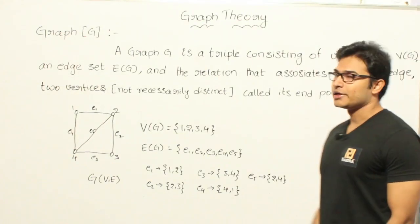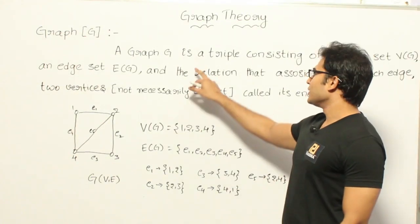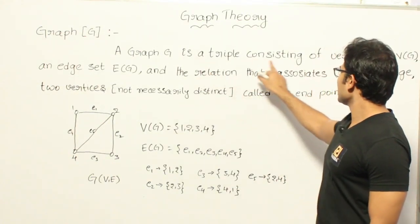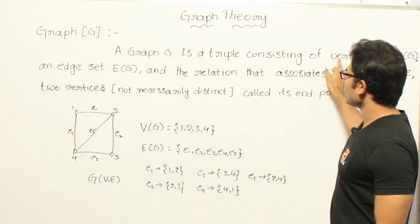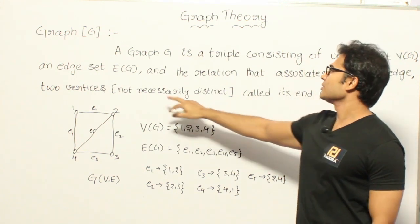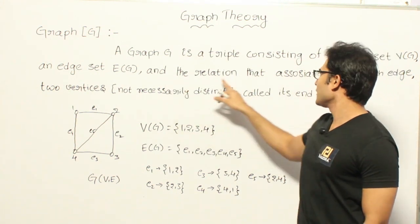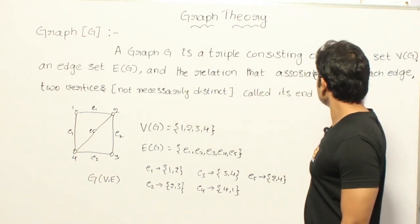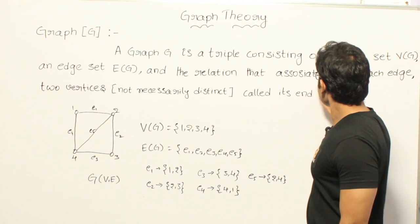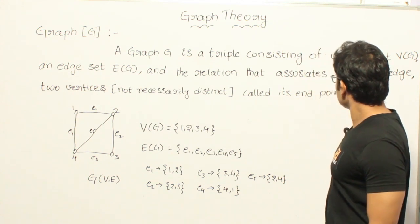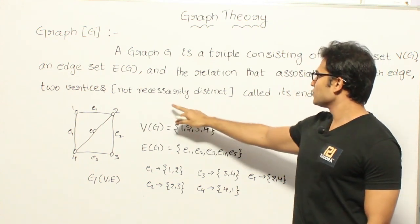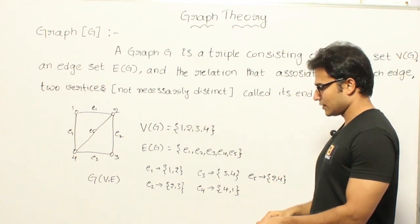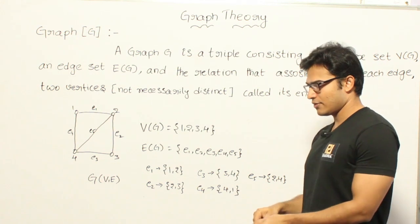Now let us see the definition of a graph. A graph G is a triple consisting of a vertex set, an edge set, and the relation that associates with each edge two vertices called its endpoints.